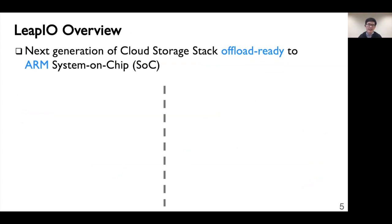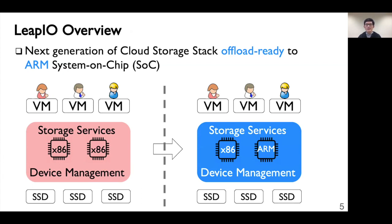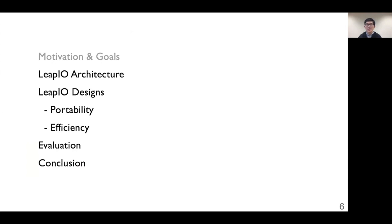Thus, in this talk, we present LibIO, our next generation cloud storage stack that leverages ARM SOC as coprocessors. Traditionally, storage stacks center around CPUs to provide virtual storage to users and manage back-end devices. LibIO allows storage services to portably run on ARM coprocessors and x86 with uniform abstraction, and helps providers cut the storage tax and improve utilization without sacrificing performance. We will walk through LibIO's architecture, discuss challenges for portability and efficiency, then show evaluation results and conclude.